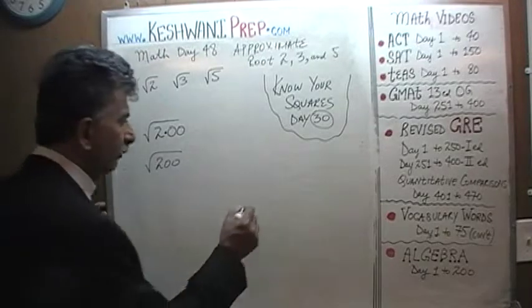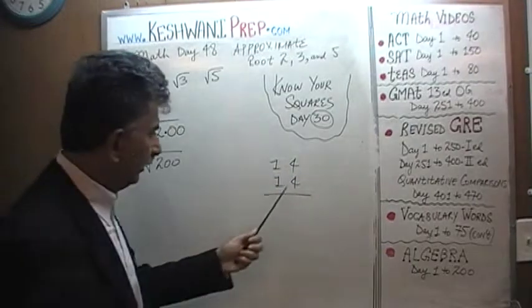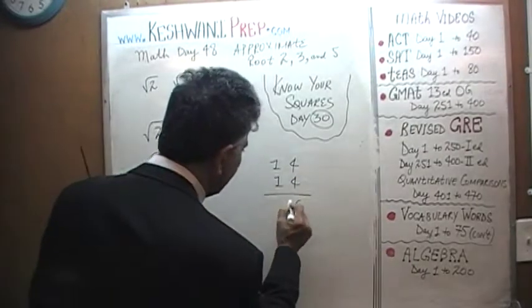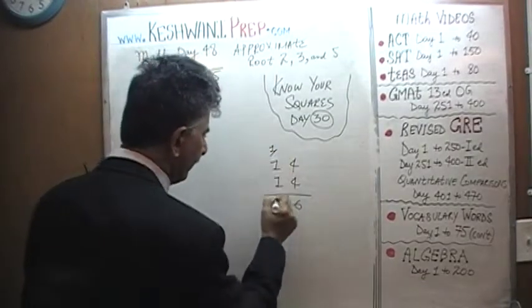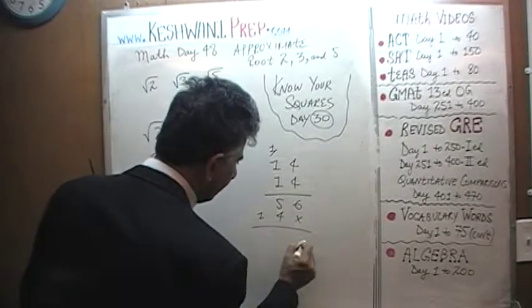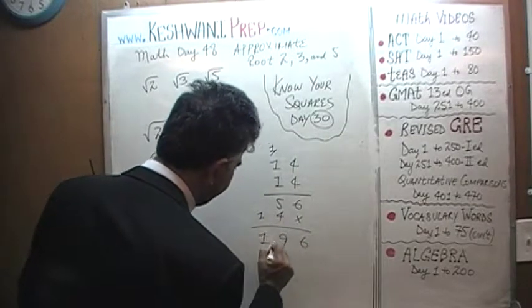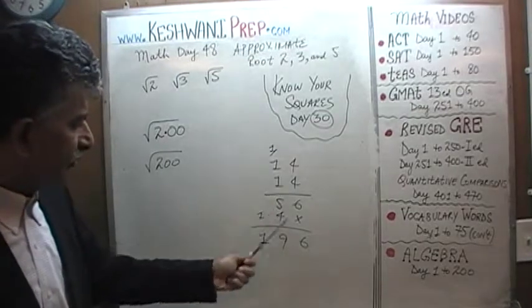Because we know that 14 squared, 14 times 14, we learn, 4 times 4 is 16, 4, 4's are 16, carry 1, 4, 1's are 4 and 5, and then times 1 is going to be 14, 6, 9, and 1. This is something we shouldn't have to do. We should know by heart that 14 squared is 196.